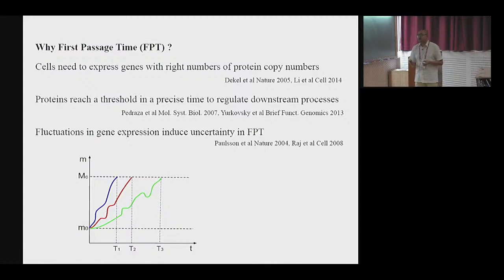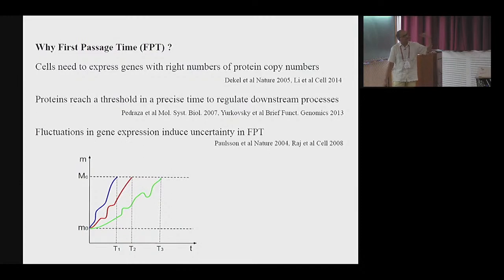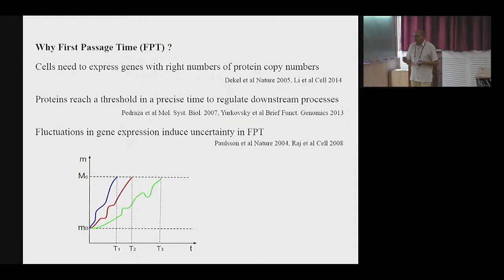Why do we need first passage time? There are two things in this problem. First, mRNAs or proteins need to reach a certain threshold. Dekel and Uriel have shown that at least in the lac-Z system in E. coli, it is important that proteins are at a certain level to trigger downstream processing. To reach this threshold starting from the basal value, it has to be done in a certain amount of time, because all downstream processes are waiting. So I need to achieve this threshold in certain times T1, T2, T3. In statistical physics we are interested in the distribution of these times — the first passage time distribution.